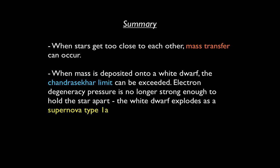When stars get too close to each other, mass transfer can occur between the two stars. When the mass deposited onto a white dwarf makes it exceed its Chandrasekhar limit of 1.4 solar masses, electron degeneracy pressure is no longer strong enough to hold the star apart. The white dwarf completely disintegrates and explodes as a supernova type 1a.